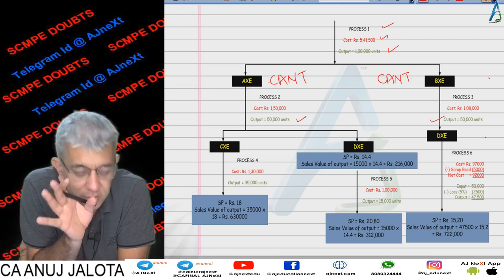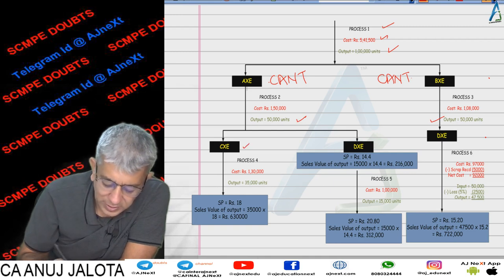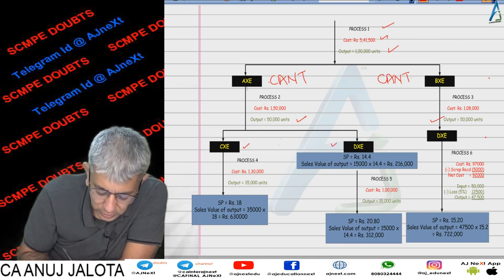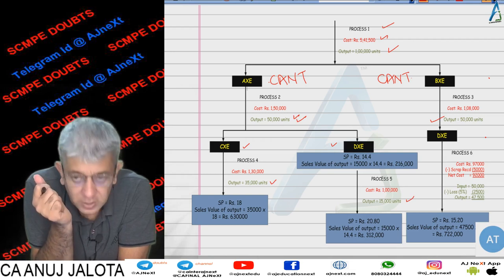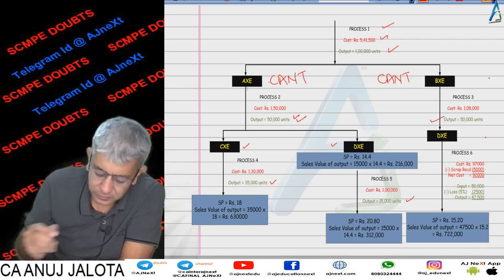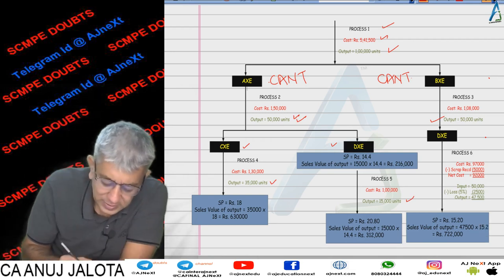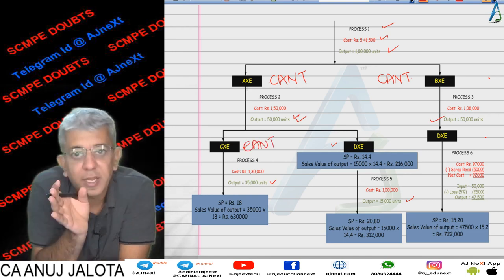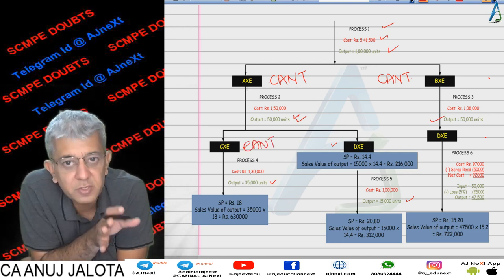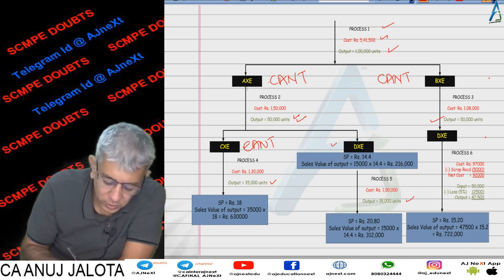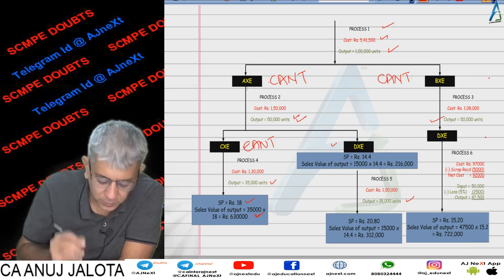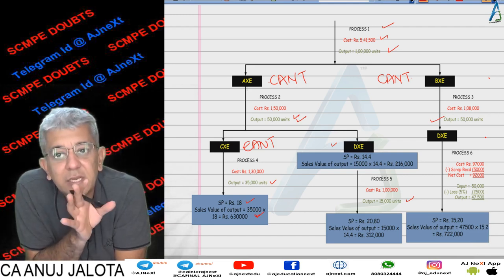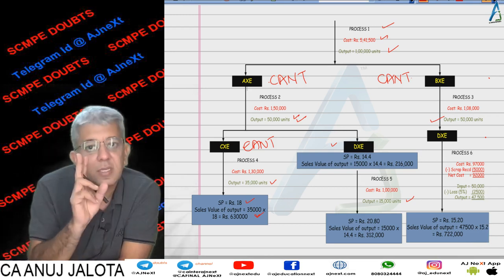Once AXC is processed in Process 2, two products come out — CXC and DXC — in the ratio of 7:3. So from 50,000 units: 35,000 units of CXC and 15,000 units of DXC. CXC cannot be sold at this stage; it must compulsorily go to Process 4, processed further, and then sold at the rate of ₹18. So 35,000 × 18 = ₹6,30,000.